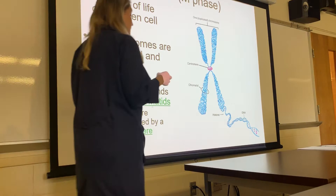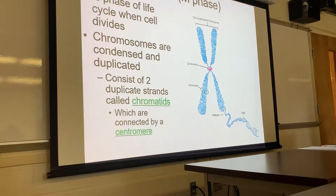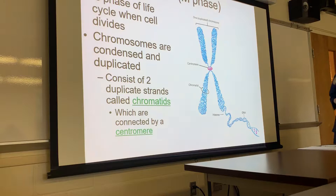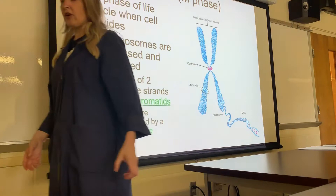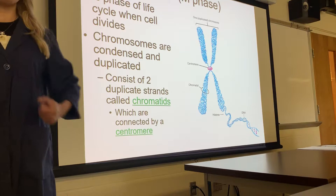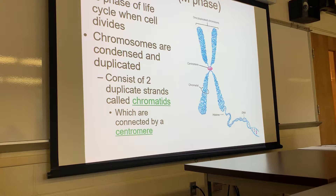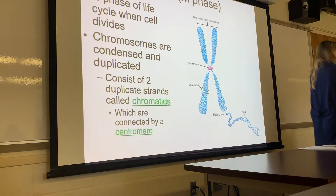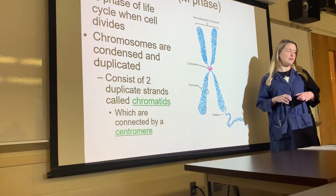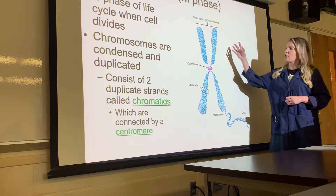DNA is highly ordered and coiled up tightly, but in interphase — when the cell is producing proteins — it needs to be in this loose form so you can access the genes. But when the cell is getting ready to divide, just like coiling a garden hose makes it easier to move, the chromatin condenses tightly into chromosomes. During cell division, the chromatin condenses really tightly into chromosomes.